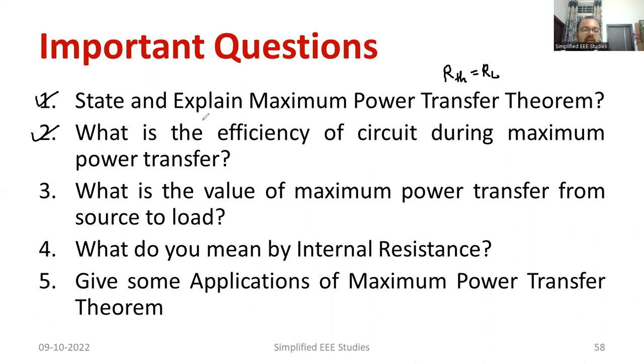What is the second question? What is the efficiency of circuit during maximum power transfer theorem? It is 50 percentage. We already did the proof in the theory part, 50 percentage. At the time of maximum power transfer theorem, circuit efficiency is 50 percentage.